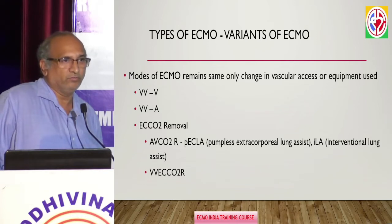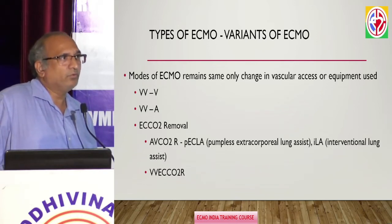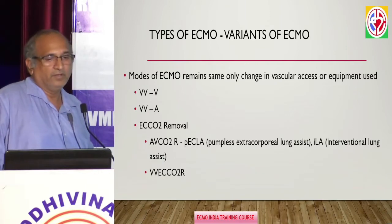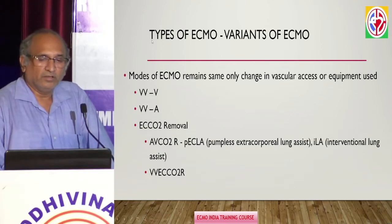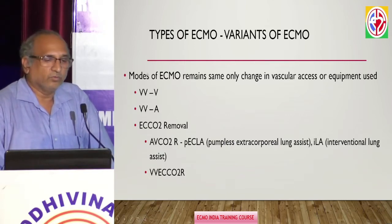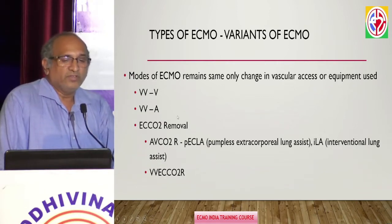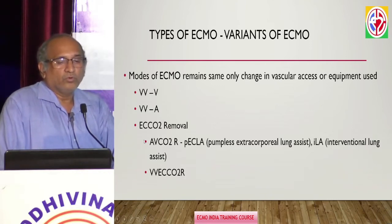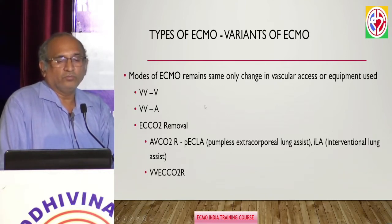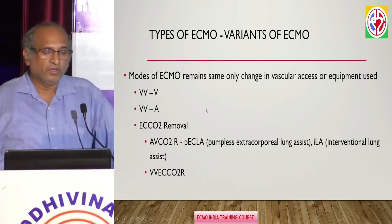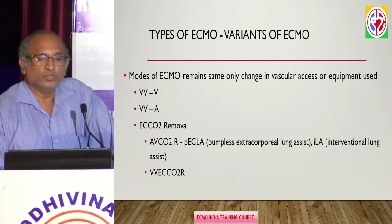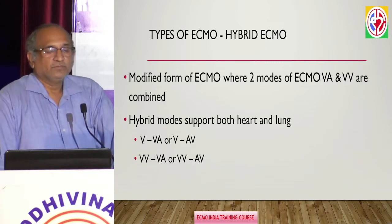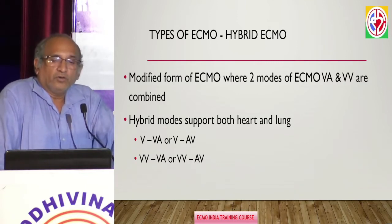Whether it is VV or VA, it remains the same. What we are going to do is put an additional drainage cannula when drainage is not sufficient. You might put an additional drainage cannula or additional vascular access — that is what we call VVV or VVA, where additional drainage is being added. Or, using the same VV ECMO system with a different oxygenator just to remove carbon dioxide — that is what we call ECO2R.